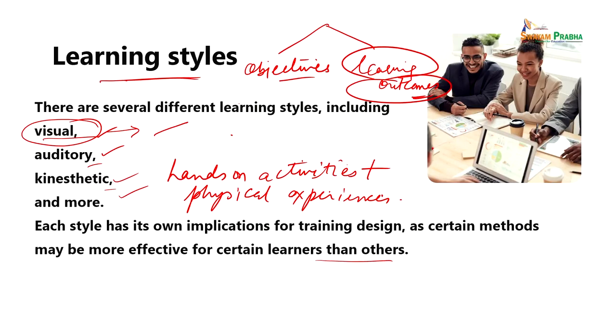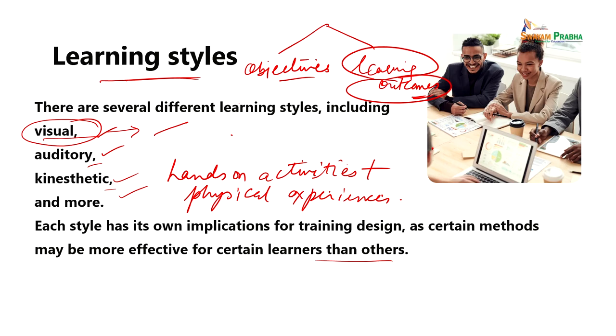Practically, it is not possible to design separate training programs for visual, auditory, and kinesthetic learners, because nobody is 100% one type of learner. Usually there is a blend of different techniques that people use to learn. To foster a good learning environment and facilitate good training, we may use a blend of such techniques to make training programs more effective. It is also essential to consider context and other factors such as cultural differences and individual preferences that can impact learning.